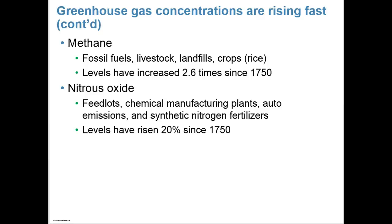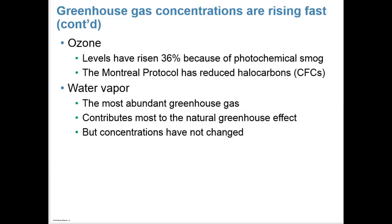Methane is another greenhouse gas found in fossil fuels, livestock, landfills, and rice crops — its levels have increased 2.6 times since 1750. Nitrous oxide is found in feedlots, chemical manufacturing plants, auto emissions, and synthetic nitrogen fertilizers, and its levels have risen 20% since 1750. Ozone levels have risen 36% because of photochemical smog, although the Montreal Protocol has reduced halocarbons (CFCs). Water vapor is the most abundant greenhouse gas and contributes most to the natural greenhouse effect, but its concentrations have not changed.